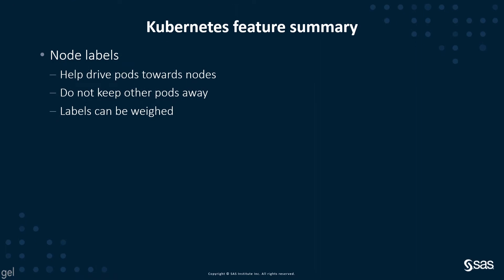In this video, I'm not going to discuss all these features in great detail. However, I would like to cover off a few things, starting with node labels. Node labels help to drive pods towards nodes, but they don't keep other pods away.